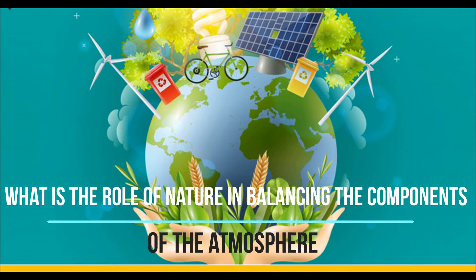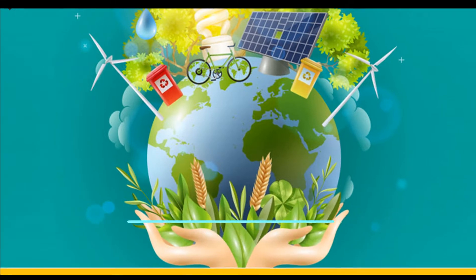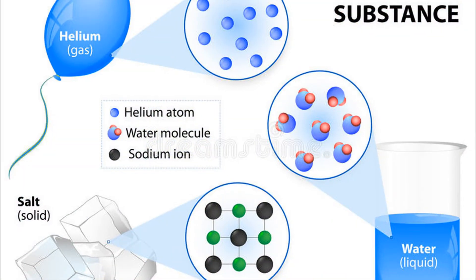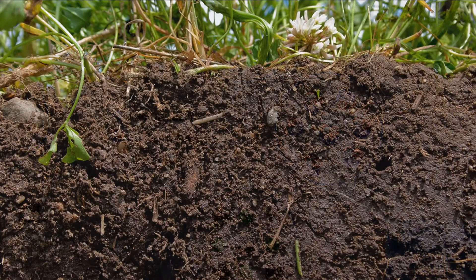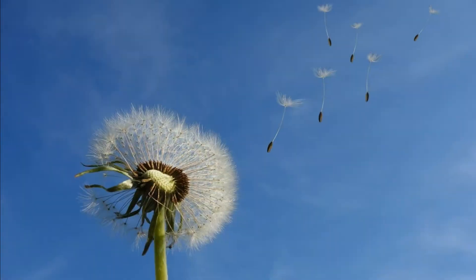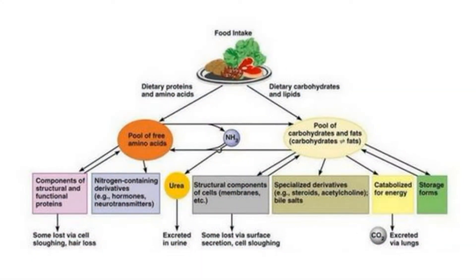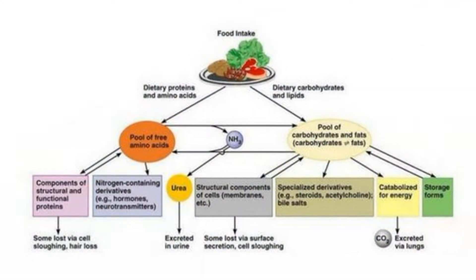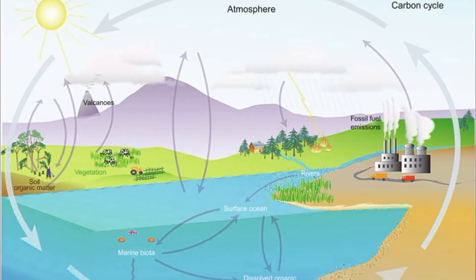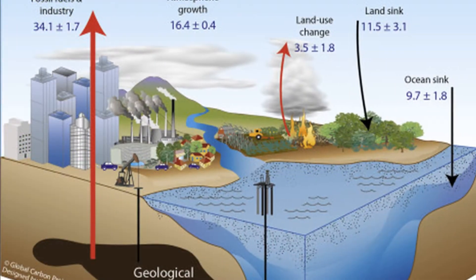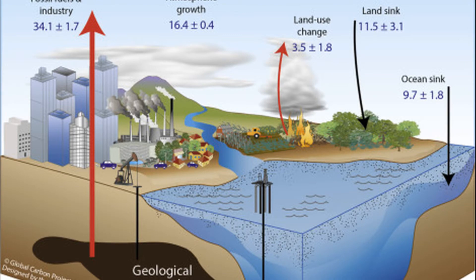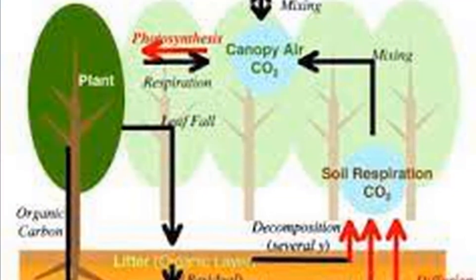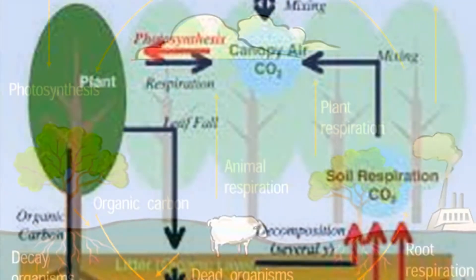What is the role of nature in balancing the components of the atmosphere? The process by which chemical substances are transferred from soil, water, and air — that is, from the nutrient pool to living beings and back to the nutrient pool — is called the biogeochemical cycle. These biogeochemical cycles help balance the composition of gases in the air.